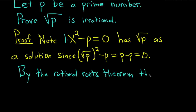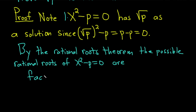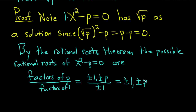By the rational roots theorem, the possible rational roots of x squared minus p equals zero are the factors of p over the factors of 1. Here's where we use the fact that p is prime — the factors of p are just 1 and p, and including negative factors: negative 1 and negative p. So the possible rational roots are plus or minus 1 and plus or minus p. Since 1 over 1 is 1 and p over 1 is p, these are the possible rational roots.